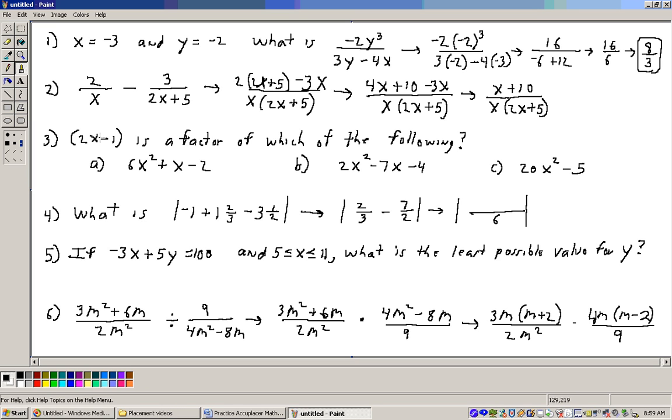Okay, problem number three says 2x minus 1 is a factor of which of the following? It could be more than one. First choice is 6x squared plus x minus 2. Well, this could factor into, first I'll look to see if there's any common factor, and there isn't. 6x squared could break into 6x and x or 2x and 3x. Let's try 2x and 3x.